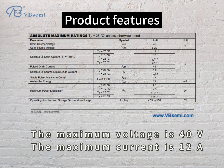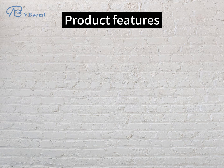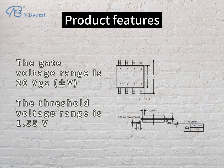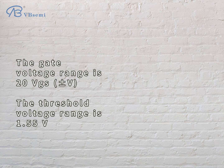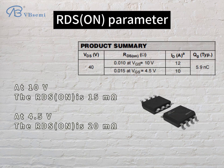The maximum voltage is 40V, the maximum current is 12A, the gate voltage range is ±20V VGS, the threshold voltage range is 1.5–5V, and the RDS(on) parameter at 10V is 15mΩ.